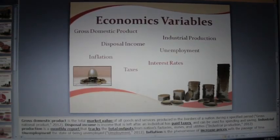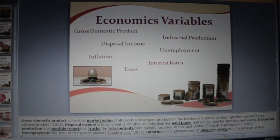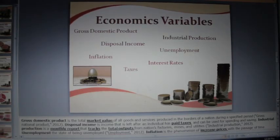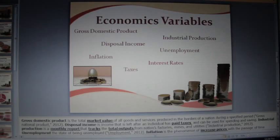Gross domestic product is the total market value of all goods and services produced in the borders of a nation during a specified period. Disposable income is income that is left after an individual has paid taxes and can be used for spending and saving. Industrial production is a monthly report that tracks the total outputs from nations' factories, mines, and utilities.